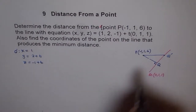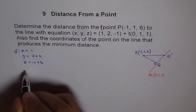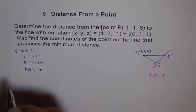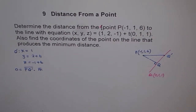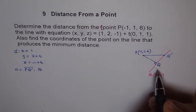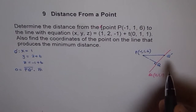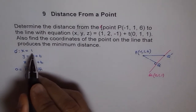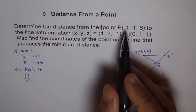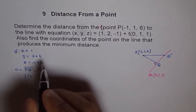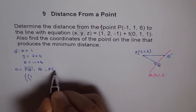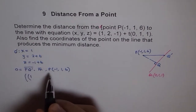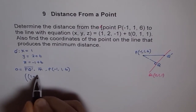Now we want PQ' dot M to equal 0. Point P is given as minus 1, 1, and 6, and Q' is our general point. So PQ' has components: 1 minus (minus 1) which gives plus 2 in X; then 2 plus T minus 1 in Y; and minus 1 plus T minus 6 in Z.